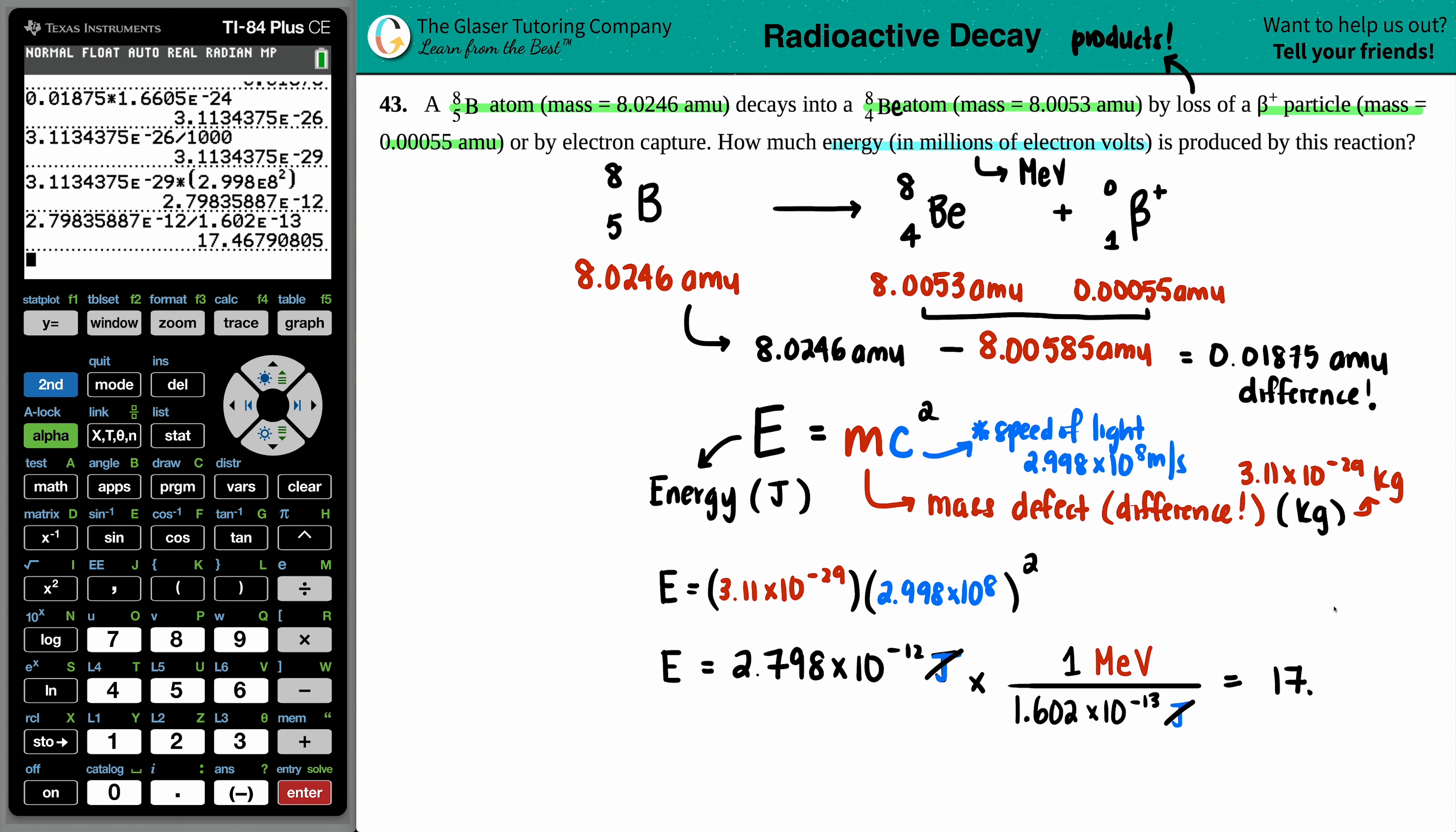17.5, maybe we'll just say 17.5. 17.47, sure. Million electron volts. And that is the final answer. And we are done.